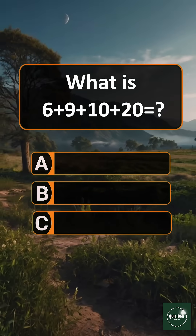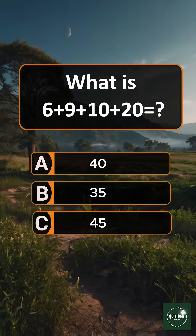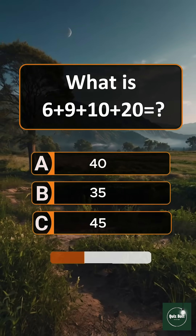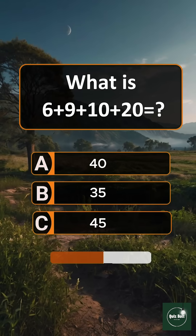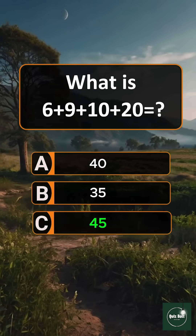Question 5. What is 6 plus 9 plus 10 plus 20? Answer A: 45.